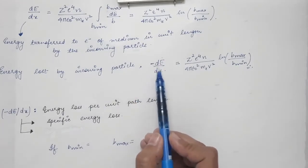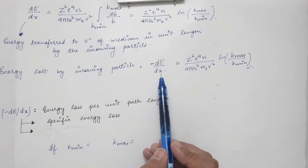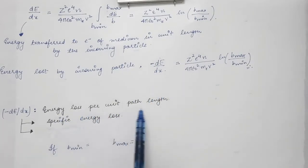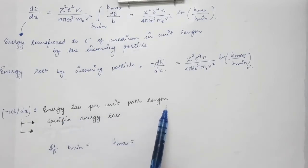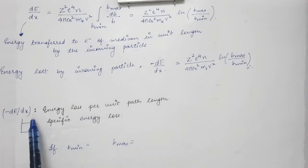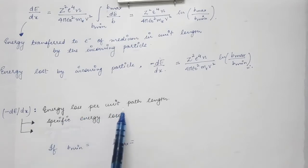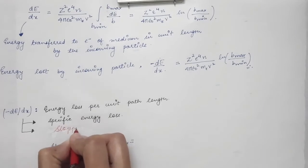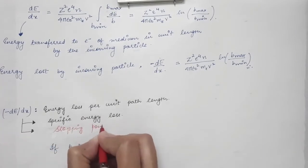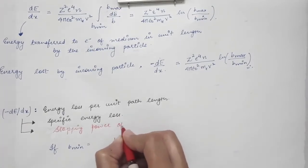The quantity minus dE/dx is the energy loss per unit path length by the heavy charged particle inside the medium. This term is also called specific energy loss, and it is also called the stopping power of the medium.